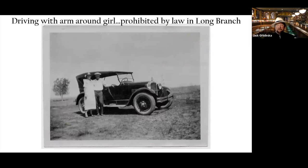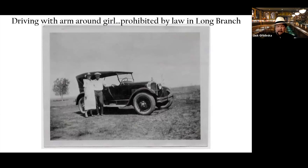The movement to prohibit alcohol had been underway for about a century, led by organizations like the Women's Christian Temperance Movement, the Anti-Saloon League, and here in New Jersey, the Methodist Church Groups in Ocean Grove and Asbury Park. These groups formed a powerful single-issue coalition that relentlessly lobbied local, state, and federal governments. When states began enacting laws to prohibit the manufacture and sale of intoxicating beverages, temperance societies stepped up the pressure on Congress — they wanted to go national.